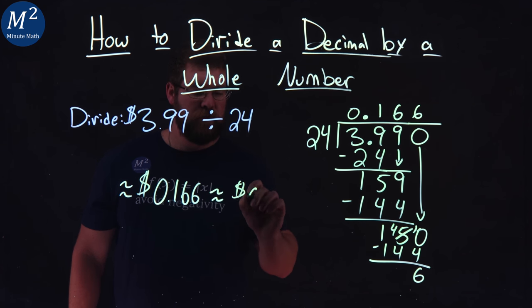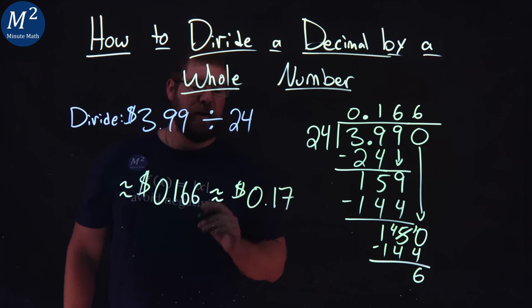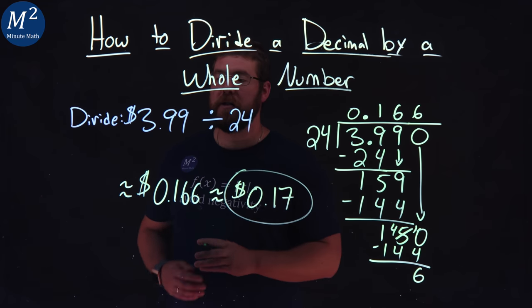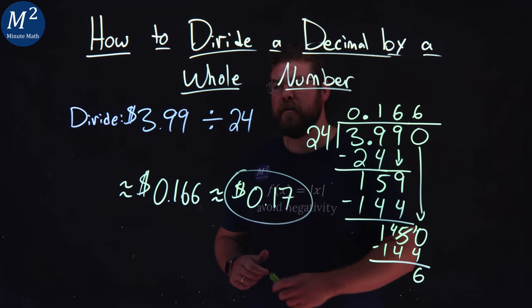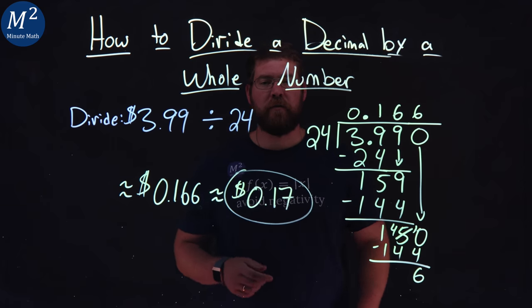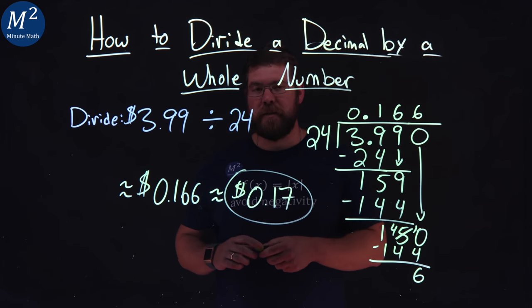So, we have 0.17 as an approximate answer to our question, which was, what's $3.99 divided by 24? Again, we got 17 cents.